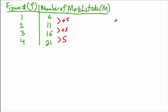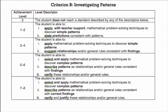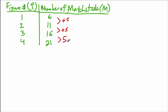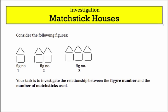So now let's see what we've done so far. We've applied mathematical problem-solving techniques to discover simple patterns — that's the increase of five each time. Next we're going to try and describe the pattern as general relationships or general rules consistent with our findings. Our goal is to find a relationship between the figure number F and the number of matchsticks M.